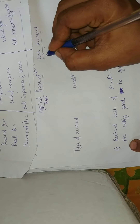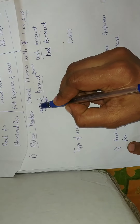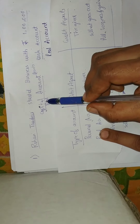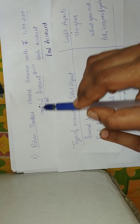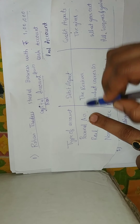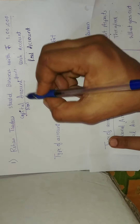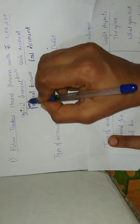Capital account is a personal account. It is considered a personal account because the capital is brought in by investors or the owner. Whoever invests in the business, that account comes under personal account. So here, the owner or shareholders are the givers, and therefore capital account comes under personal account.